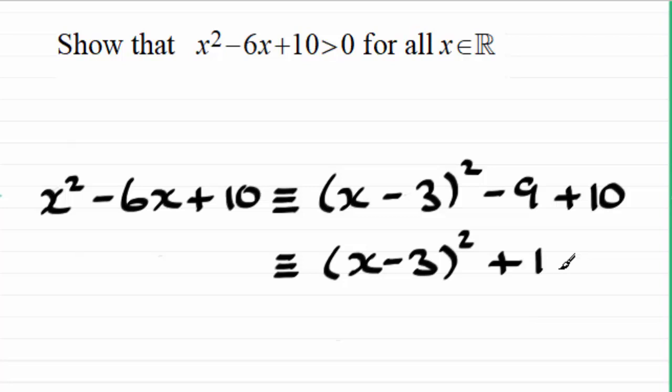So how does this help us show that this is always greater than zero, always a positive value for all real values of x? Well it's easy, because this first term here, (x - 3)² because it's a squared term, it will always be positive. And if you're adding it to another positive number, well two positive numbers are always going to be positive, going to be greater than zero.